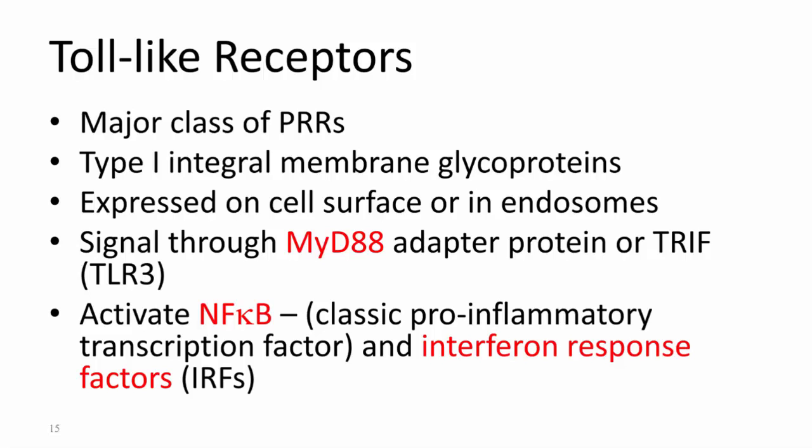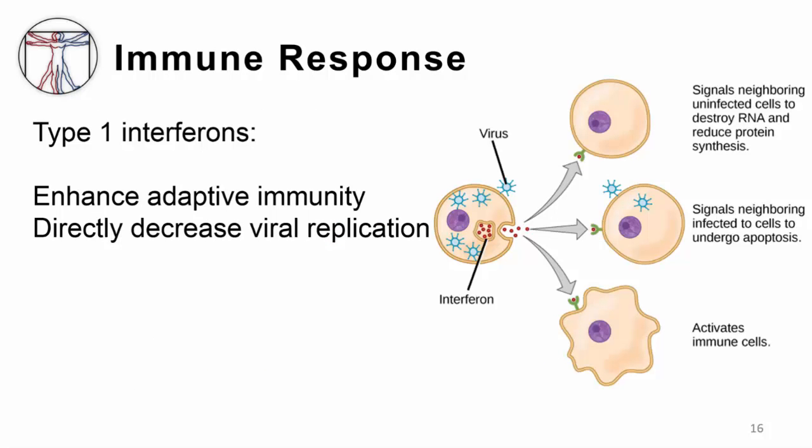Toll-like receptors are expressed on cell surfaces or in endosomes, where they can interact with antigens. TLR3 is found in endosomes of T, B, dendritic, and NK cells, where it can interact with viral antigens after the virus is endocytosed. When a virus is recognized by TLR3, a series of transcription factors are activated that result in inflammation. NF-κB activates transcription of cytokines, chemokines, and adhesion molecules. Interferon response factors control expression of interferons, which are critical to stop viral replication. Type 1 interferons increase natural killer cell activity, activate antigen-presenting cells like dendritic cells, and CD4 and CD8 T cells by upregulating MHC molecule expression. They also directly limit viral replication and signal adjacent cells to undergo apoptosis.